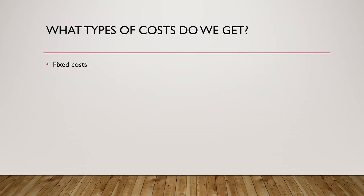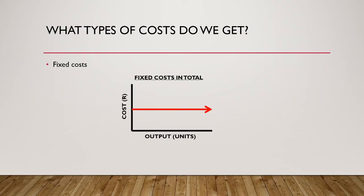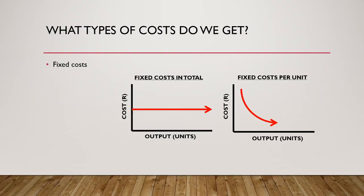Now let us look at the major types of costs we get and how they behave. The first type of cost we get is a fixed cost. As the name implies, fixed costs do not change in total as our activity level increases — they are fixed. We can see this on the graph, as our line is completely flat. However, if we look at the fixed cost per unit, we see that it is decreasing at a decreasing rate. Our line will approach zero, but never quite get there. So the fixed cost per unit decreases with each additional unit of activity as the cost is being spread over more units. An example of a fixed cost would be factory rental — whether we produce one unit or 10,000 units of a product, the amount of rent we pay would not change.